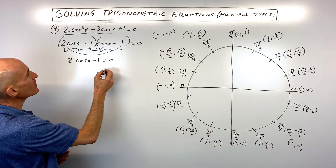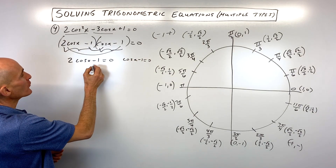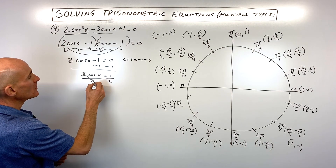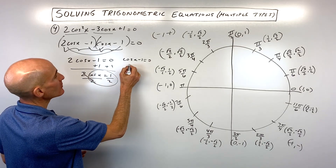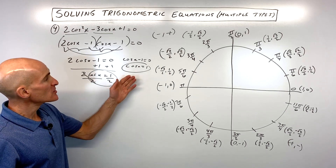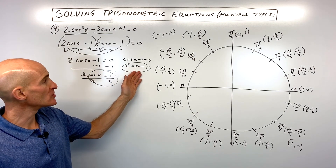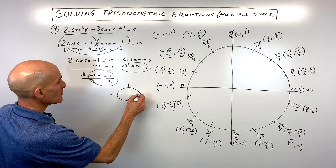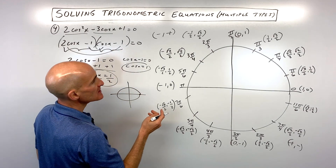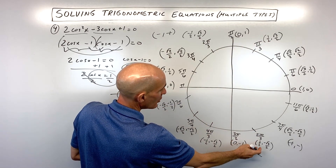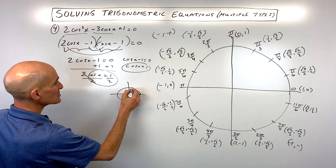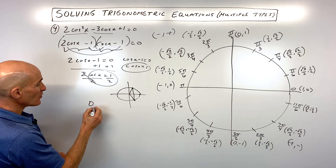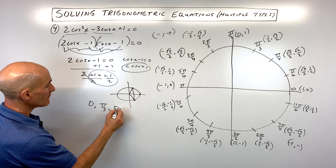Setting each factor equal to zero: 2cos(x) - 1 = 0 gives cos(x) = 1/2, and cos(x) - 1 = 0 gives cos(x) = 1. Cosine is the x-coordinate on the unit circle. Where is x = 1? That's at angle 0. And where is cosine = 1/2? That's at π/3 and 5π/3. So our solutions from 0 to 2π are 0, π/3, and 5π/3.